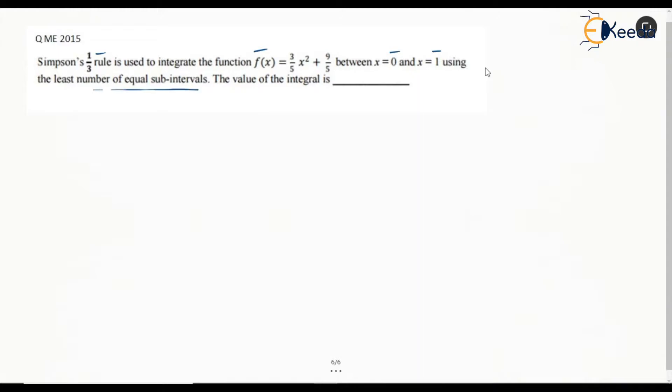We know that for Simpson's rule the number of intervals has to be even. So least number of sub-intervals means n is going to be equal to 2, and in that case the step size or width is going to be the upper limit which is 1 minus lower limit which is 0, by 2, which will become 0.5.